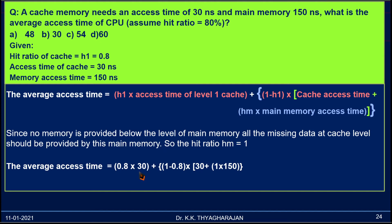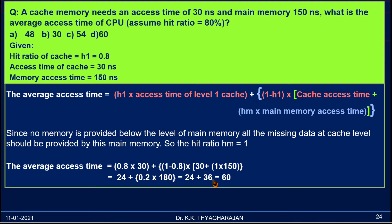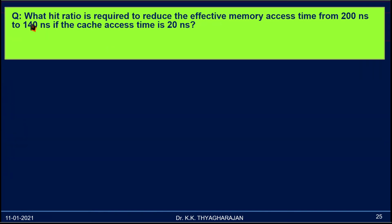Substituting all the values: H1 is 0.8, cache access time is 30 nanoseconds, (1 minus 0.8) into 30, Hm is 1, and main memory access time is 150. Solving: 0.8 × 30 = 24, and 0.2 × (30 + 150) = 0.2 × 180 = 36. So the average access time is 24 plus 36, which equals 60 nanoseconds. The answer is D) 60 nanoseconds.